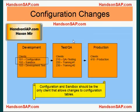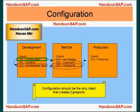Discipline one is: configuration and sandbox should be the only clients that allow changes to configuration tables. No other client should have configuration table access given to the users. Only these two clients should be allowed to have configuration changes. Configuration should be the only client that creates the transport. No other client creates the transport.